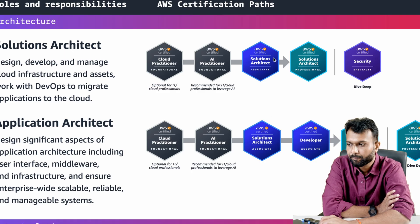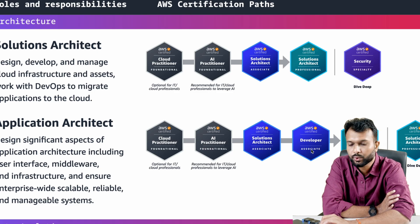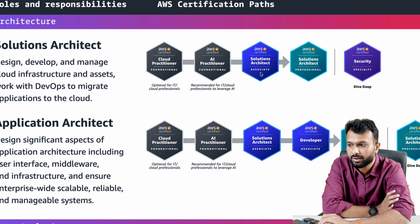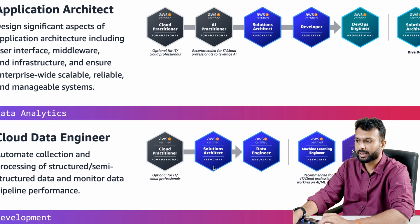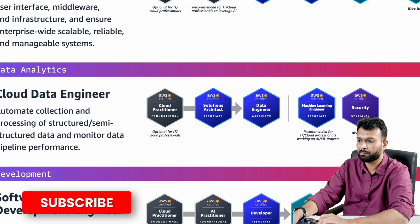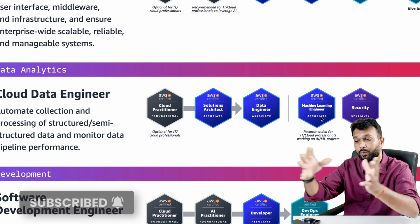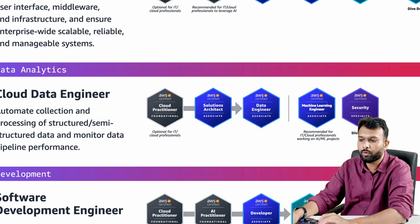For an application architect, after the first three certifications, you also follow the Developer Associate and DevOps Engineer Professional. For Solution Architect, after Solution Architect Associate it goes directly to the Professional level, skipping those two extra certifications. There are also specialty paths — after cloud you can pursue data engineering, deep dive security, or machine learning if you want to divert your path in that direction.